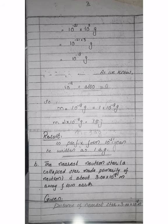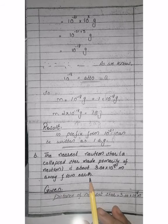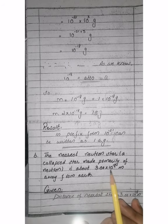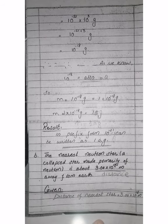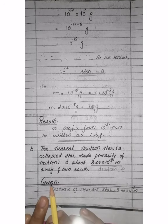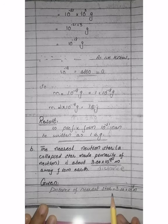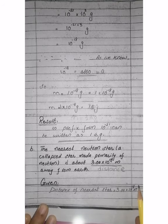Now look at Part B. The nearest neutron star — a collapsed star made primarily of neutrons — is about 3.00 into 10 raised to the power of 18 meters away from the Earth. How far is this star? 3.00 into 10 raised to the power of 18 meters. The distance is given and we have to change it into prefix form with powers of 10. The given heading: distance of the nearest star is equal to 3.00 into 10 raised to the power of 18 meters.